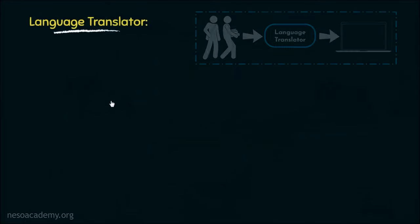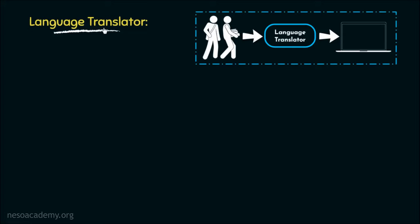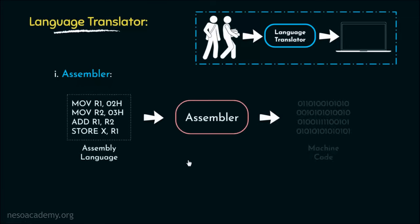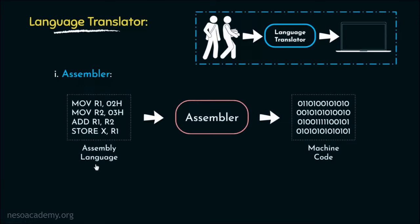Over the time, computer scientists came up with various language translators. The first one was the assembler. Debuted in the late 1948, these language translators could translate assembly language into its machine code, that is strings of ones and zeros. Now assembly language has a very strong correspondence between the instructions of it and the architectural specification of the computer. That means in order to write instructions in assembly language, the coder needs to have a proper knowledge about the computer's architecture first. It seems tedious too, doesn't it?